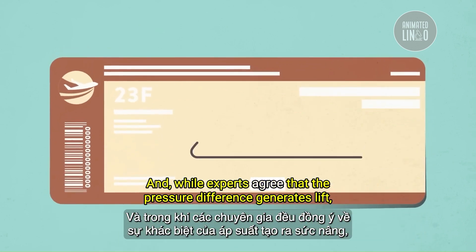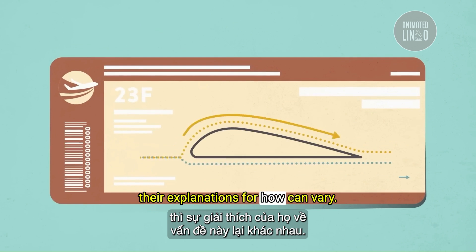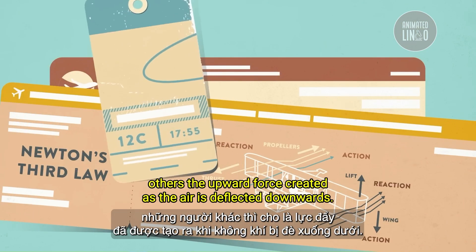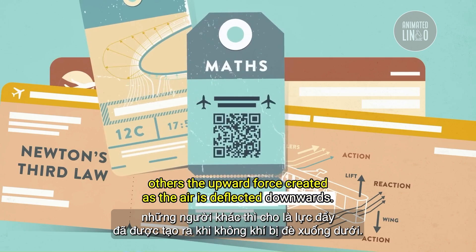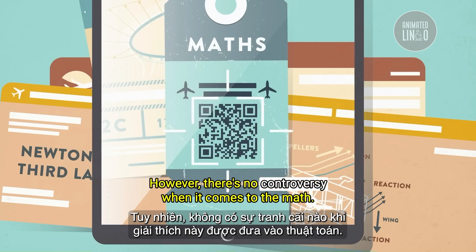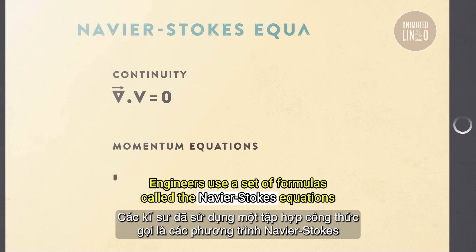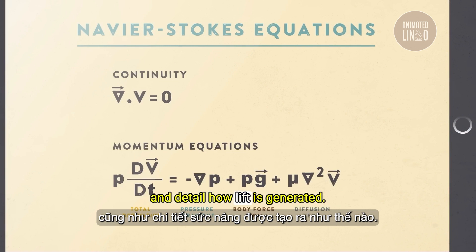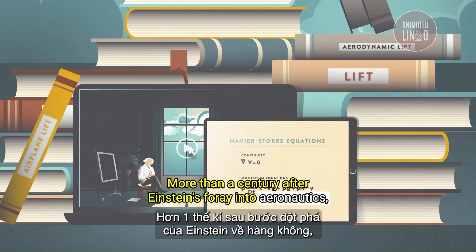While experts agree that the pressure difference generates lift, their explanations for how can vary. Some might emphasize the air's behavior at the wing's surface; others, the upward force created as the air is deflected downwards. However, there's no controversy when it comes to the math. Engineers use a set of formulas called the Navier-Stokes equations to precisely model air's flow around a wing and detail how lift is generated.